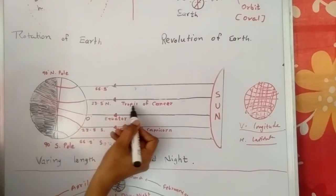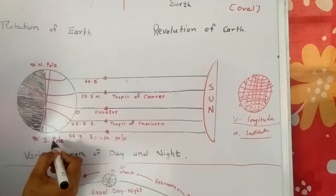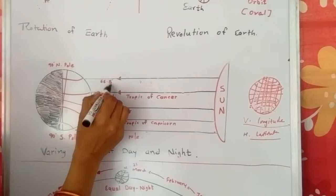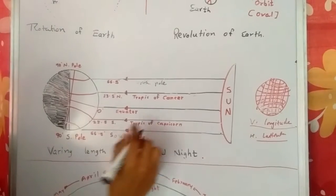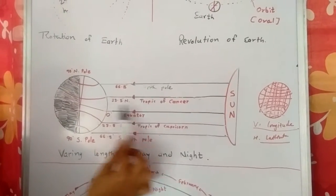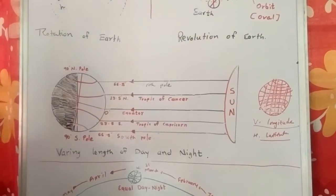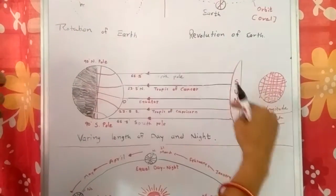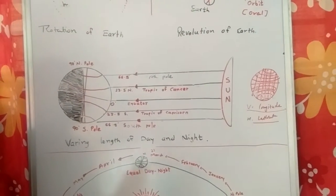The Tropic of Cancer is at 23.5 degrees North, and the Tropic of Capricorn is at 23.5 degrees South. The line at 66.5 degrees North is the Arctic Circle, and at 66.5 degrees South is the Antarctic Circle. Where sun rays fall directly, the temperature is hot and humid. Where sun rays fall at a slant or barely at all, the climate is very cold.